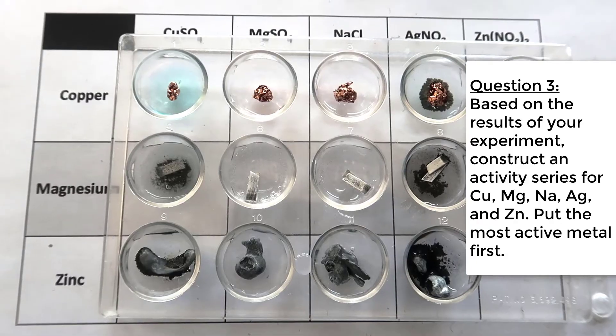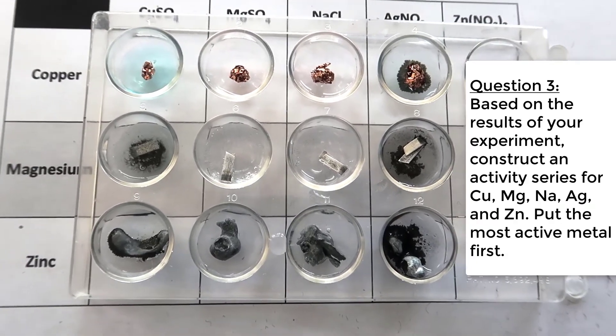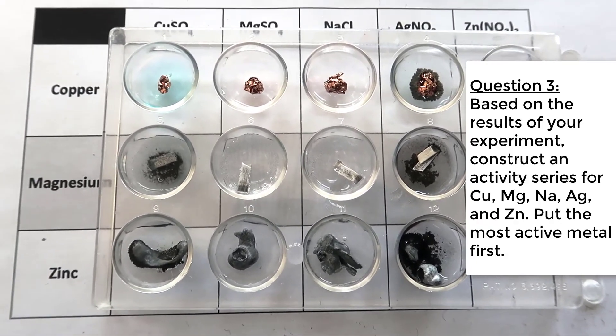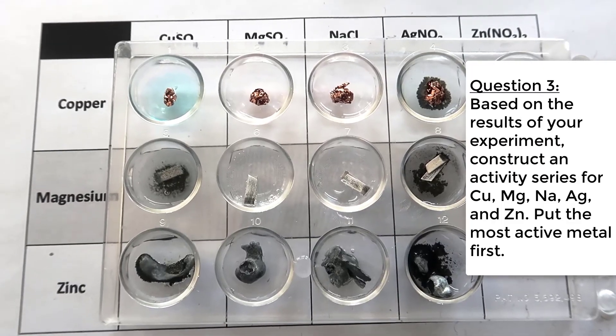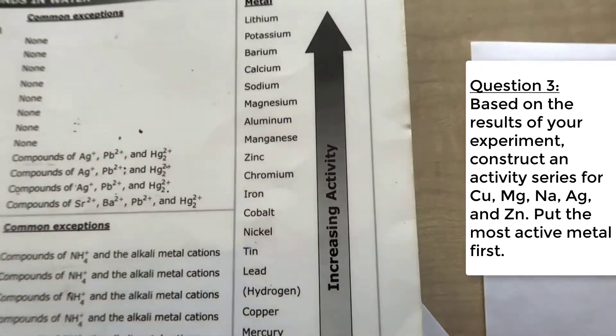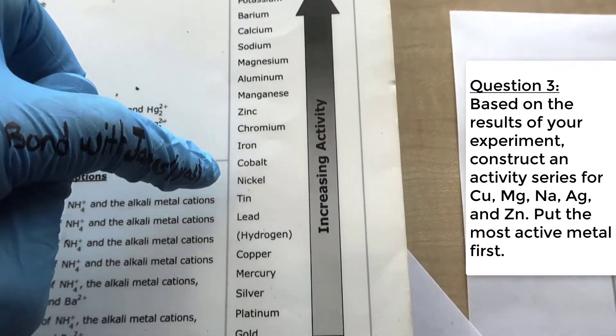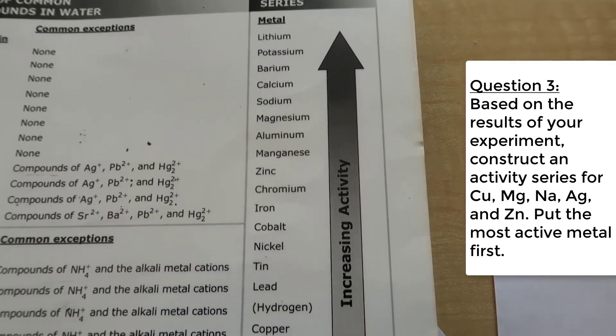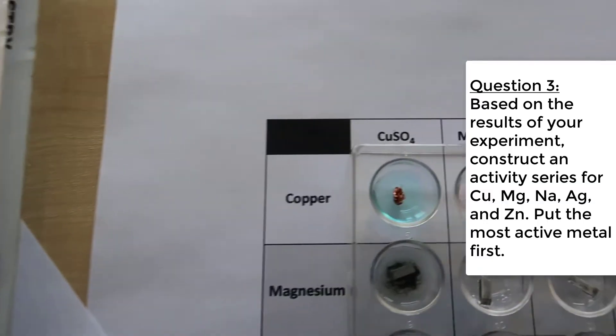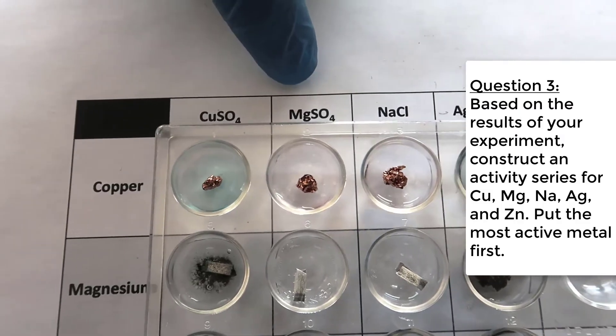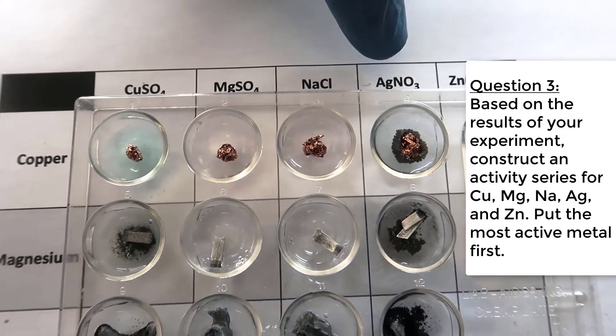And then last but not least, based on your results of your experiment, you're going to construct an activity series for these five metals. You're going to put the most active metal first. So hopefully you have a chart that looks like this. So you want to find where those are on the list and then see how they react. This one has copper in it. This one has magnesium, sodium, and silver.